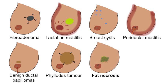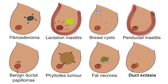Fat necrosis can occur after trauma, which may or may not be recollected. The lump may appear and feel quite sinister but is actually benign. Finally, duct ectasia is dilatation of the ducts and occurs in peri- or post-menopausal women. Typically the breast is painful; however, the condition may be confused with malignancy. There may be a lump with bloody discharge and nipple inversion or retraction.